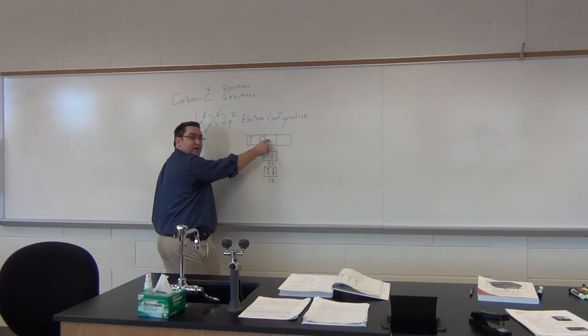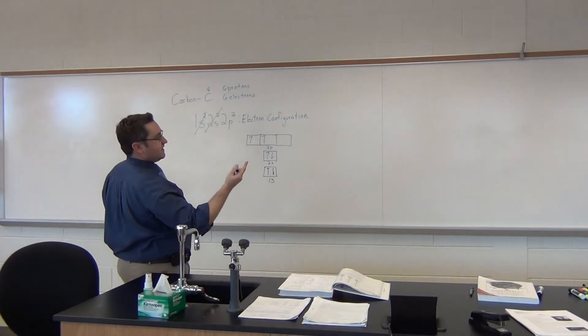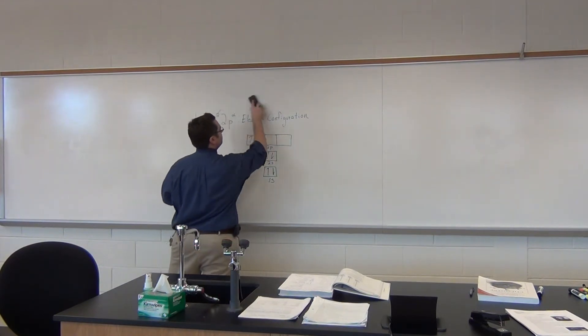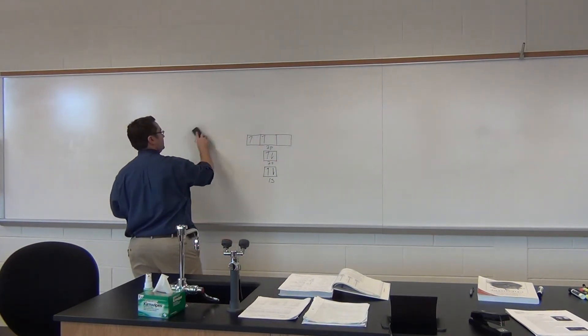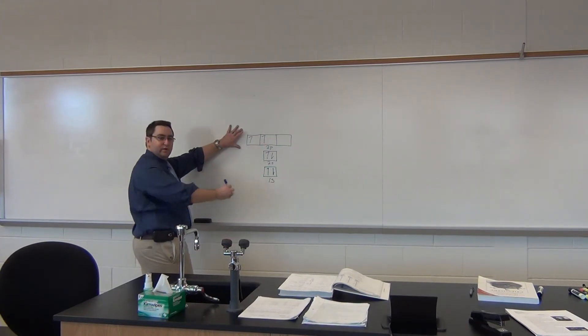So if we look at the next one in the periodic table which is nitrogen, nitrogen has seven. So to fill, we'll just keep continuing to fill - this one as an example, you would fill that other third box.